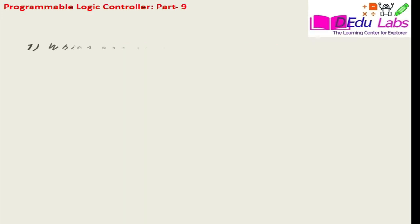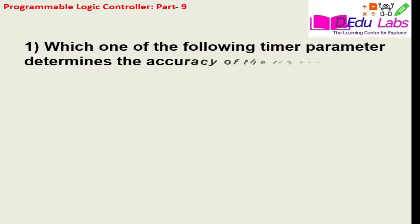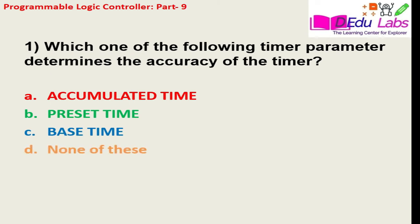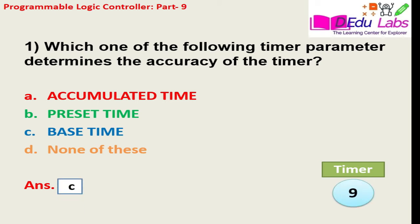Question number one: which one of the following timer parameters determines the accuracy of the timer? Option A: accumulated time. Option B: preset time. Option C: base time. Option D: none of these. The answer is base time, that is option number C.